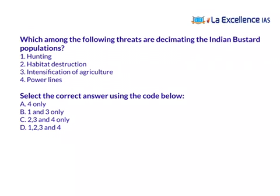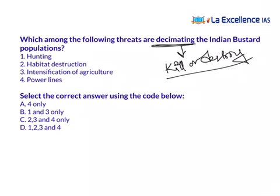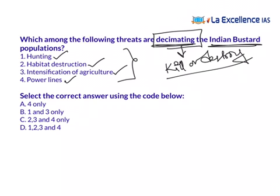Yesterday's first question: which among the following threats are decimating — meaning killing or destroying — the Indian Bustard populations? Hunting, habitat destruction, intensification of agriculture, and power lines are all four human activities threatening the Indian Bustard. The answer is D — all four options, 1, 2, 3, and 4, are correct.